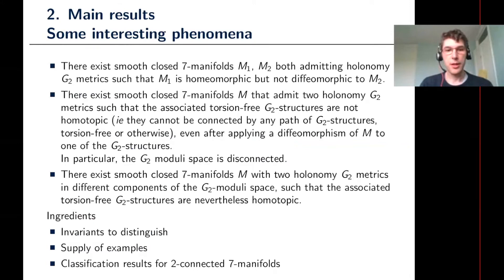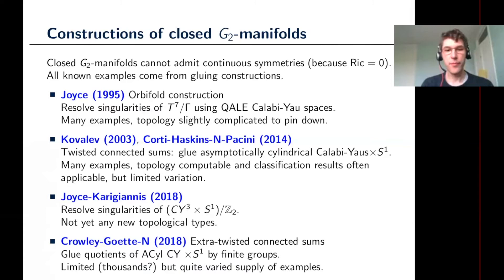Audience question: Could I just make sure that I understand correctly — the first example, the T7, is it algebraic like C-star, or is it a product of S1? Answer: No, just a product of seven copies of S1.